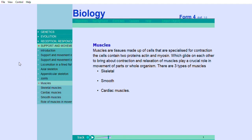Muscles are tissues made up of cells that are specialized for contraction. The cells contain two proteins, actin and myosin, which glide on each other to bring about contraction and relaxation of muscles. They play a crucial role in movement of parts or whole organism. There are three types of muscles: skeletal, smooth, and cardiac muscles.